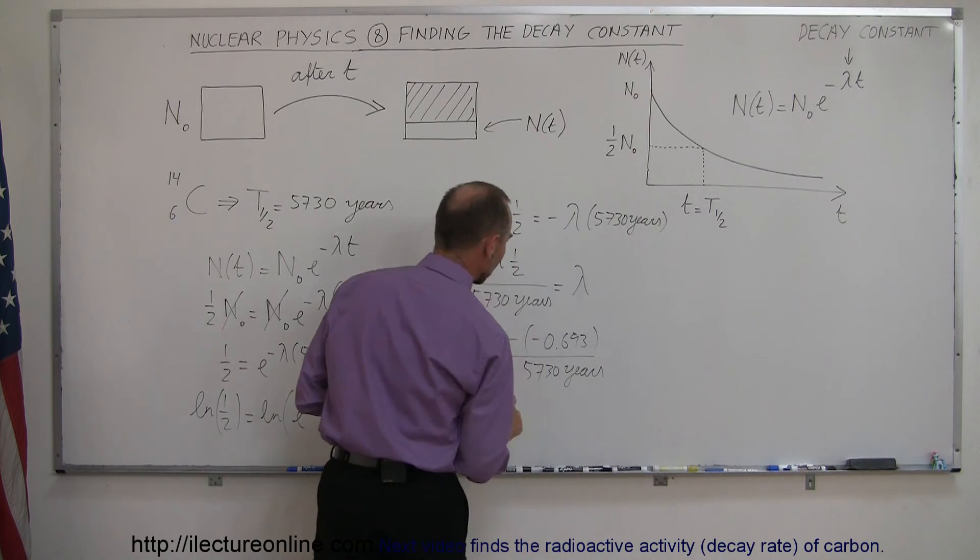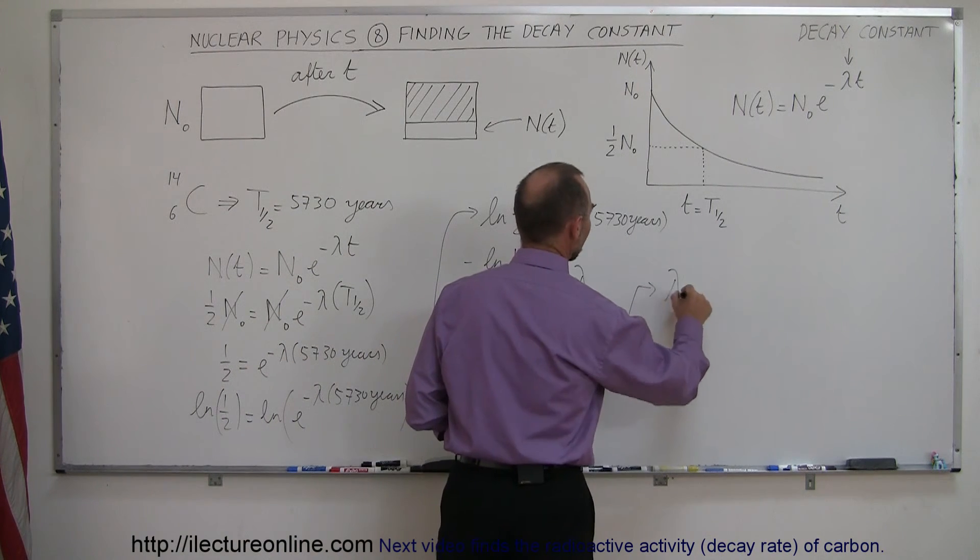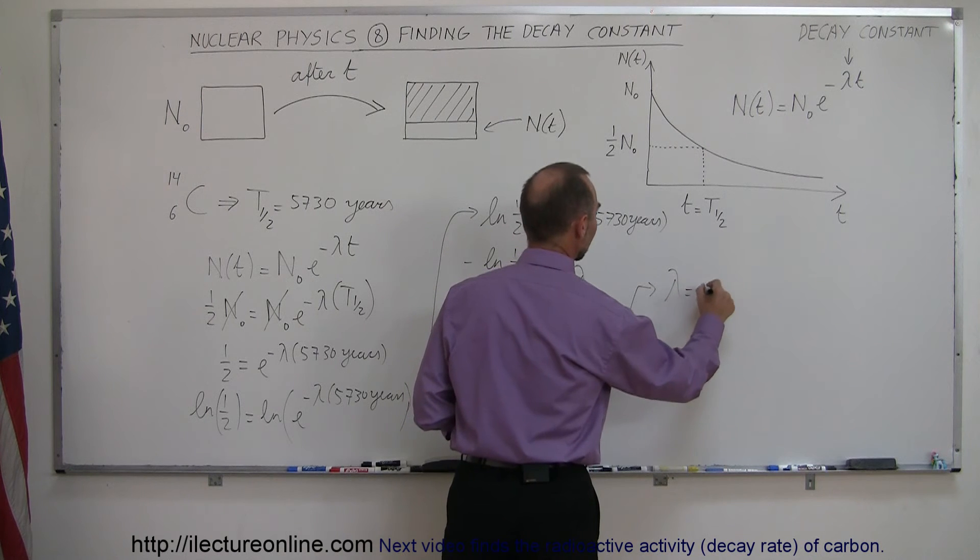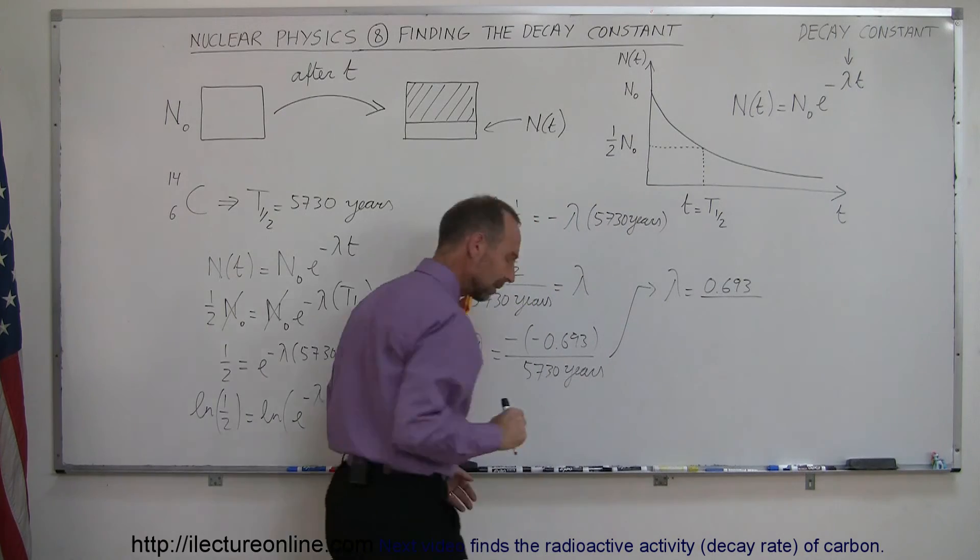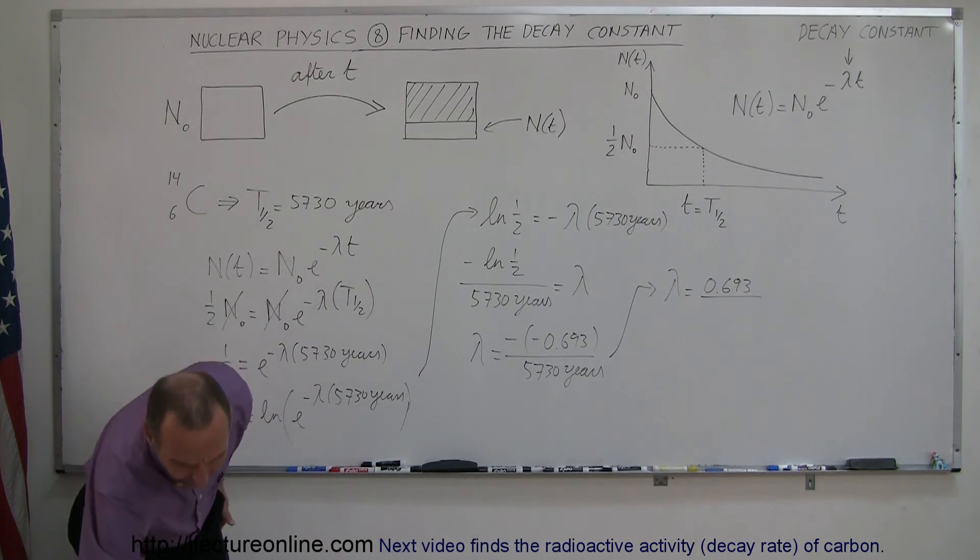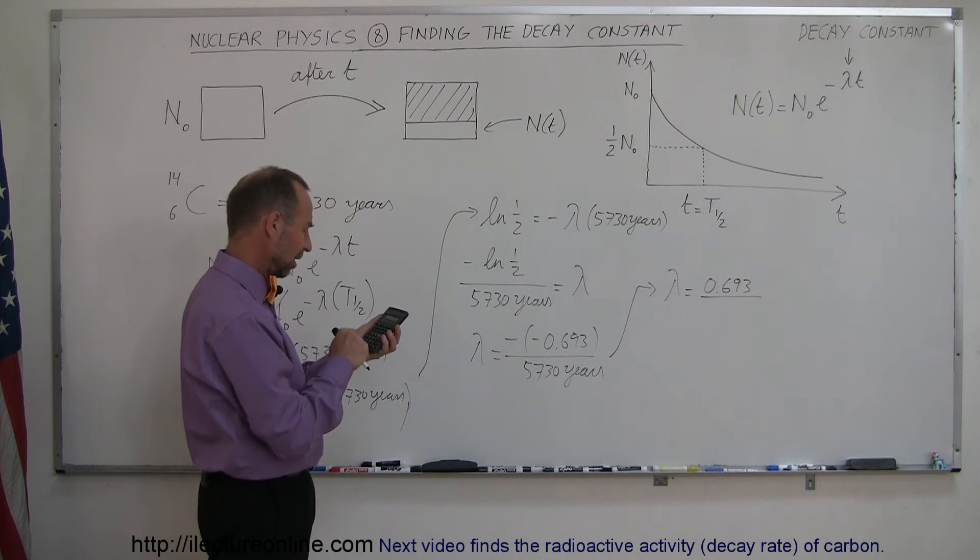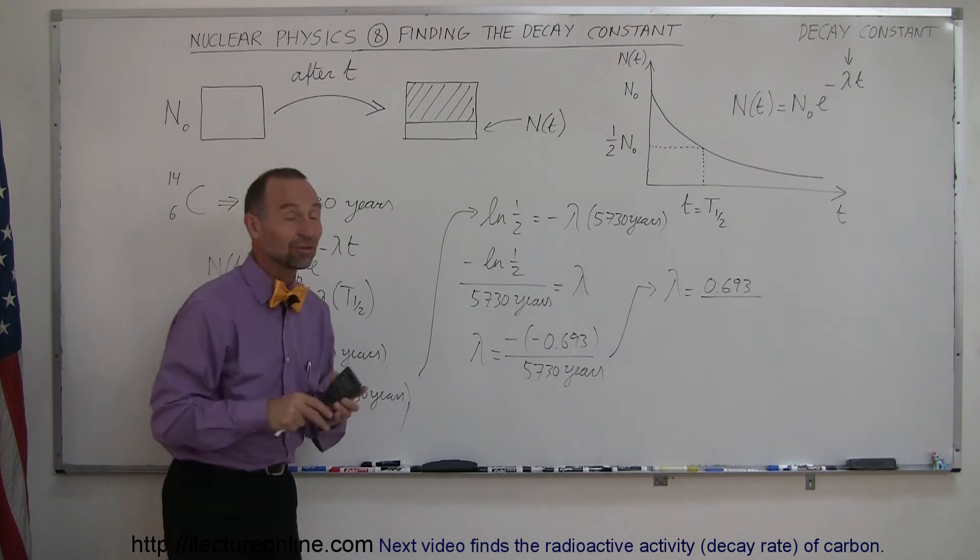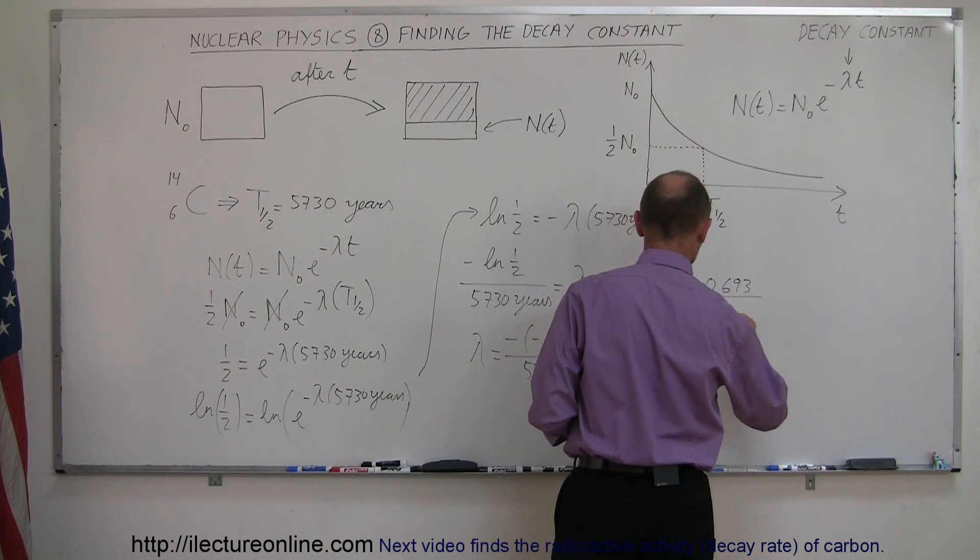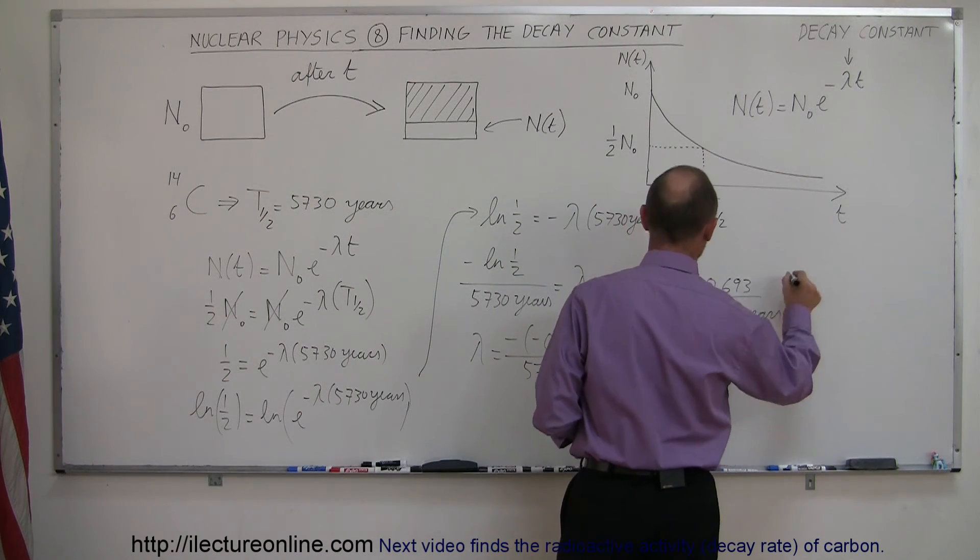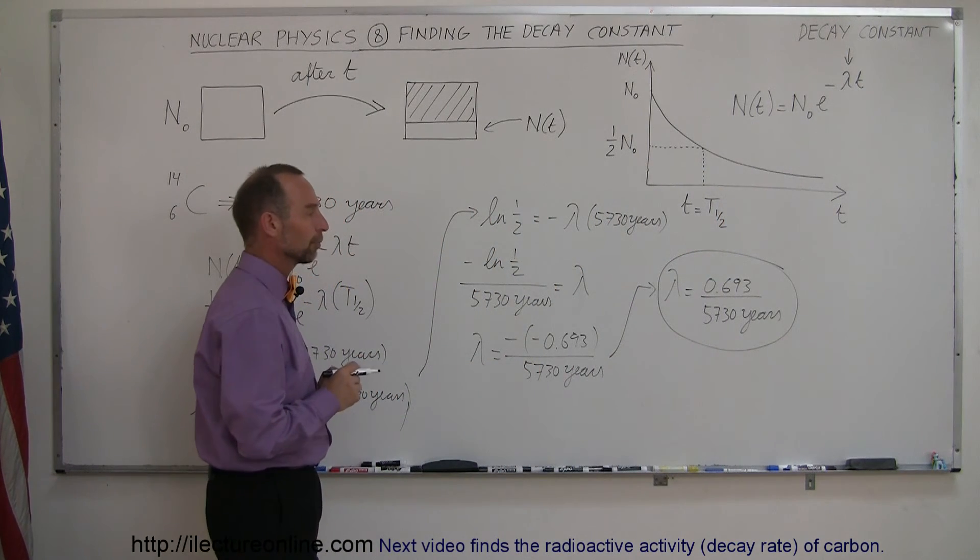And finally, when you negate the negative signs, you can then say that lambda, the decay constant we're looking for, is equal to 0.693 divided by... and you know what? Let me check that because somehow I'm getting a feeling that may not be the right number. So I just want to check. So 0.5, take the natural log of that. Yeah, it is correct. Good thing. All right, divided by 5,730 years. And that would be the decay constant of that particular element, this particular carbon-14.